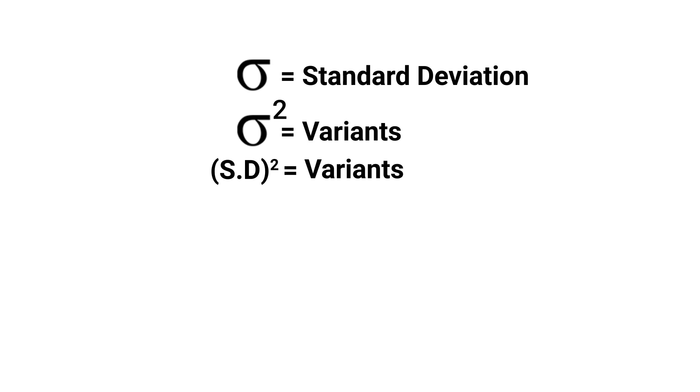And in this case, the previous case, where our standard deviation came out to be root 6, the variance would be square of root 6. That would be 6. So 6 is variance and root 6 is our standard deviation. So I hope you guys are clear with what is standard deviation and what is variance.